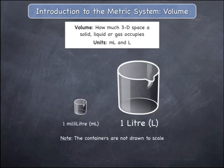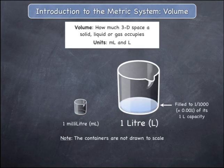You can represent the capacities of one millilitre and one litre with empty containers, as shown. Imagine filling up the smaller container of one millilitre with water, and then tipping that volume of water into the empty, larger, one litre container on the right. It would only very partially fill that larger container — to exactly one one-thousandth, which is 0.001 of its one litre capacity.